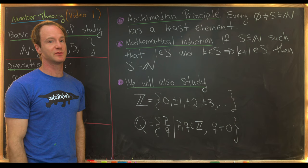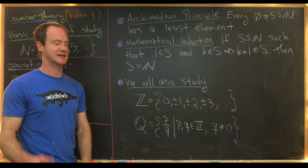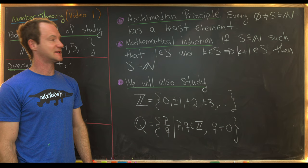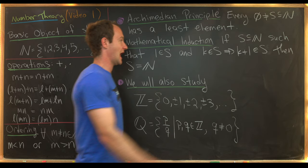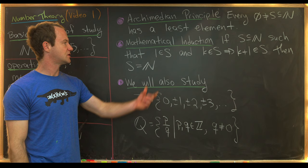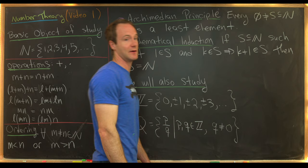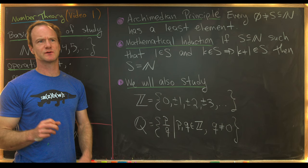We'll have a whole video devoted to practicing mathematical induction a couple of videos from now, but let's just recall its basic setup. If we've got a set S of natural numbers satisfying two conditions — one is an element of S, and if K is an element from S that implies K plus one is an element from S — then S is in fact all of the natural numbers. You can think of one being in S as the base case, K being in S as the induction hypothesis, implying the induction step K plus one is in S.